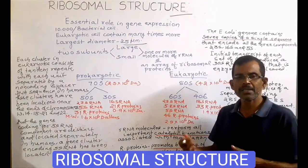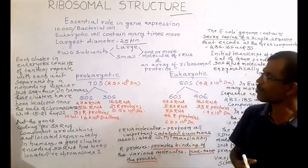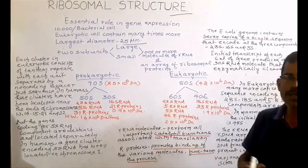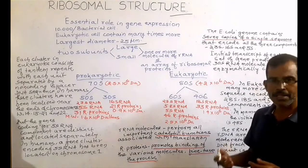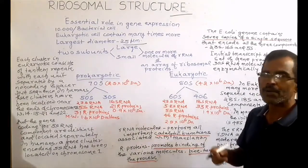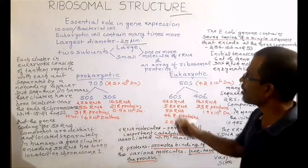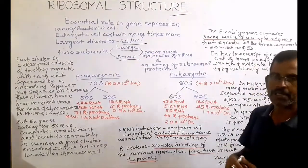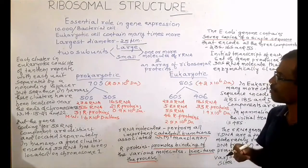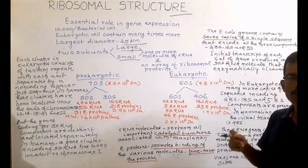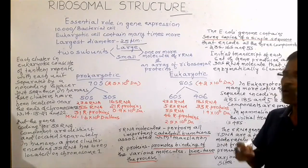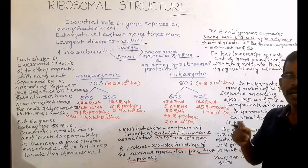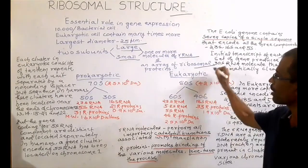Ribosomes are present in both prokaryotes and eukaryotes. Both prokaryotic and eukaryotic ribosomes consist of two unequal subunits: one large subunit and one small subunit. Both subunits are composed of one or more molecules of ribosomal RNA and an array of ribosomal proteins.